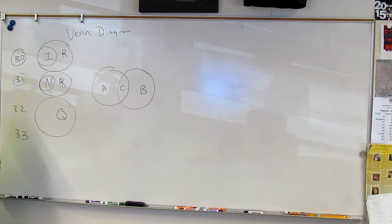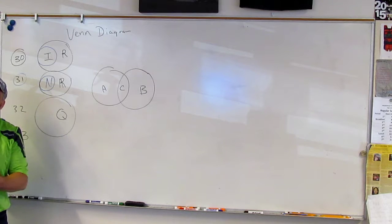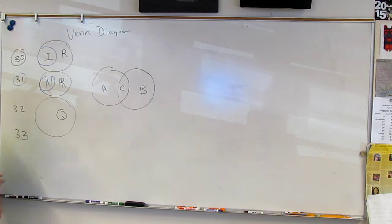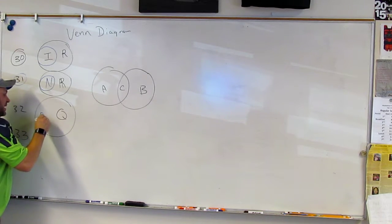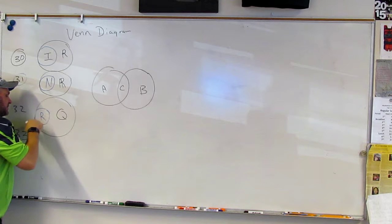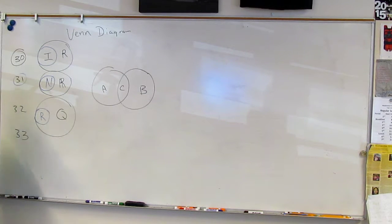But rectangles have to have right angles. So there's not as many rectangles as there are quadrilaterals. But all rectangles are quadrilaterals. Right? So again, the rectangles are inside the circle. But it's a smaller circle.